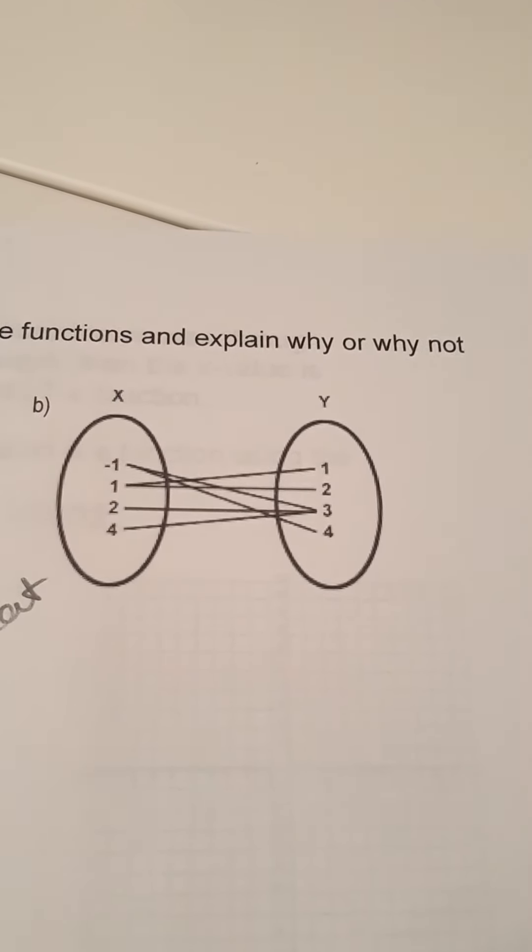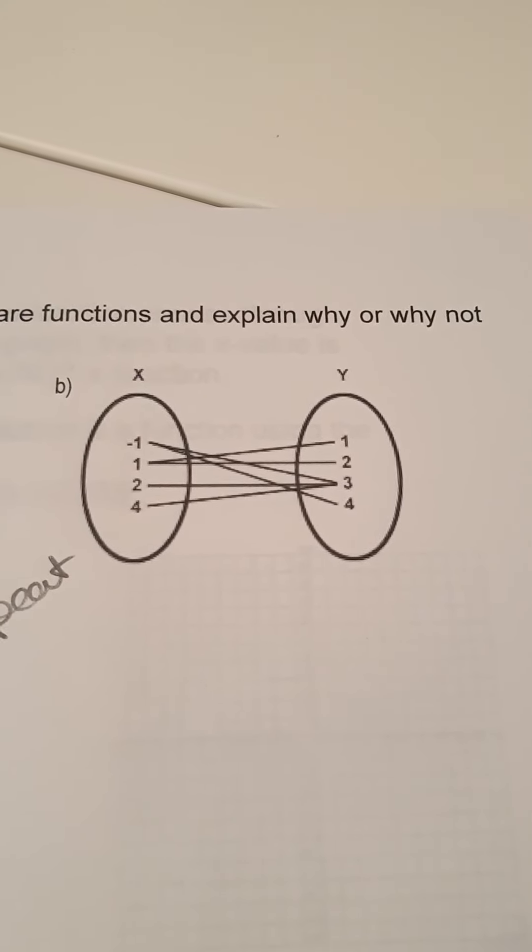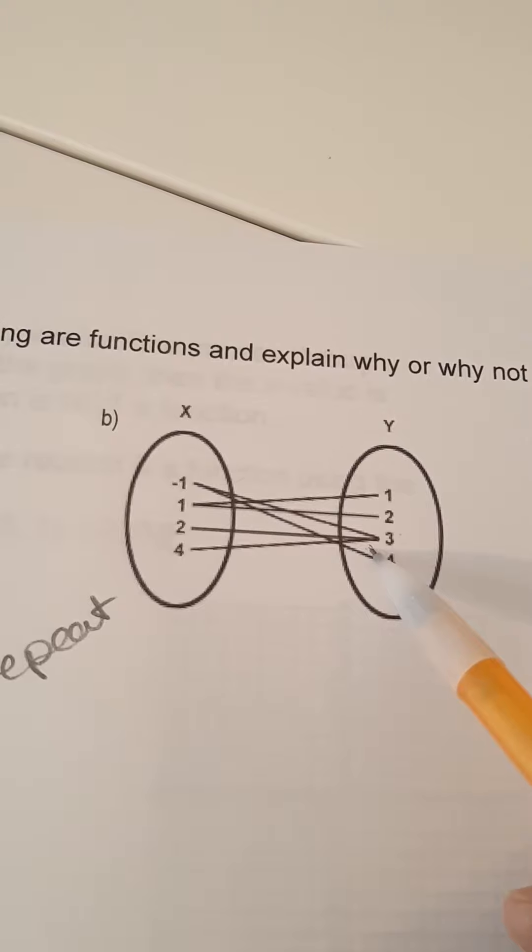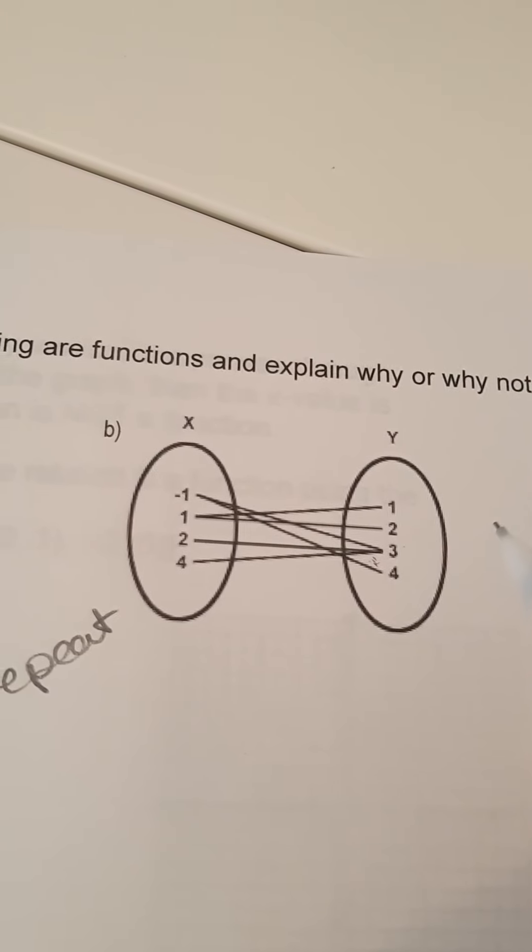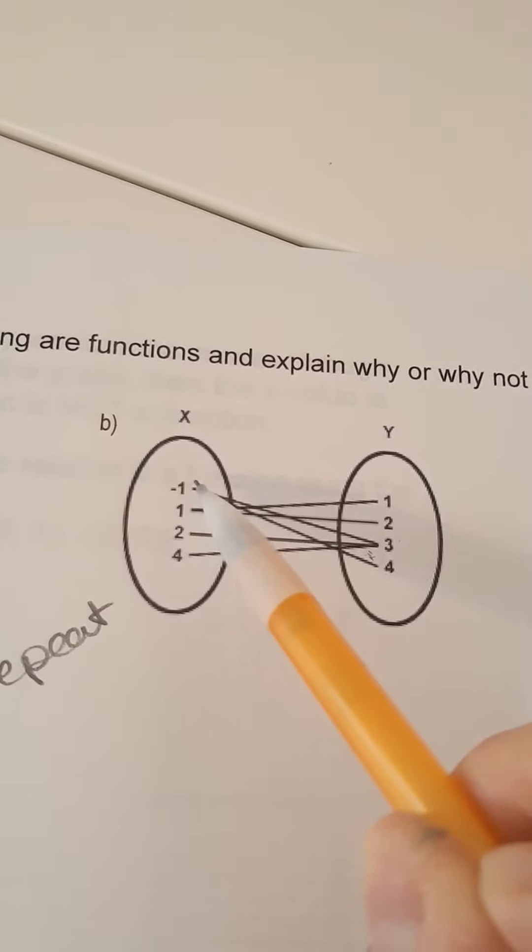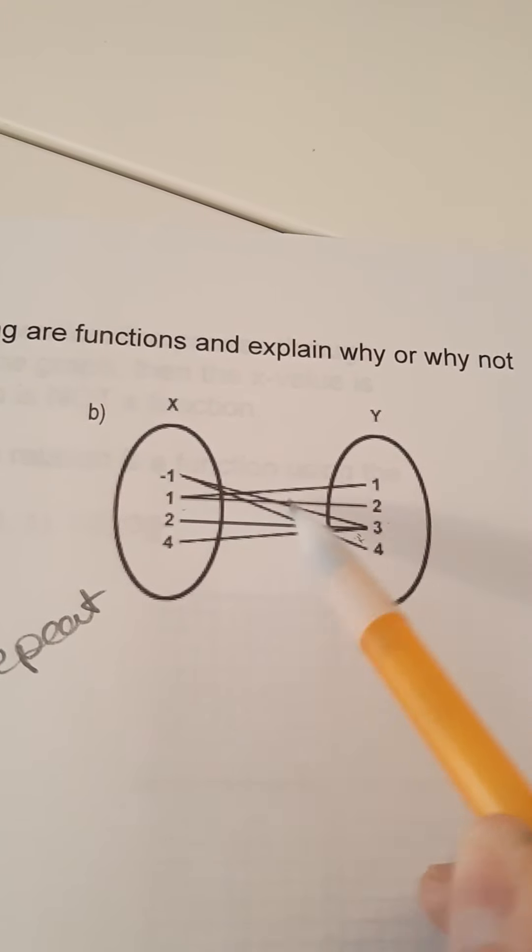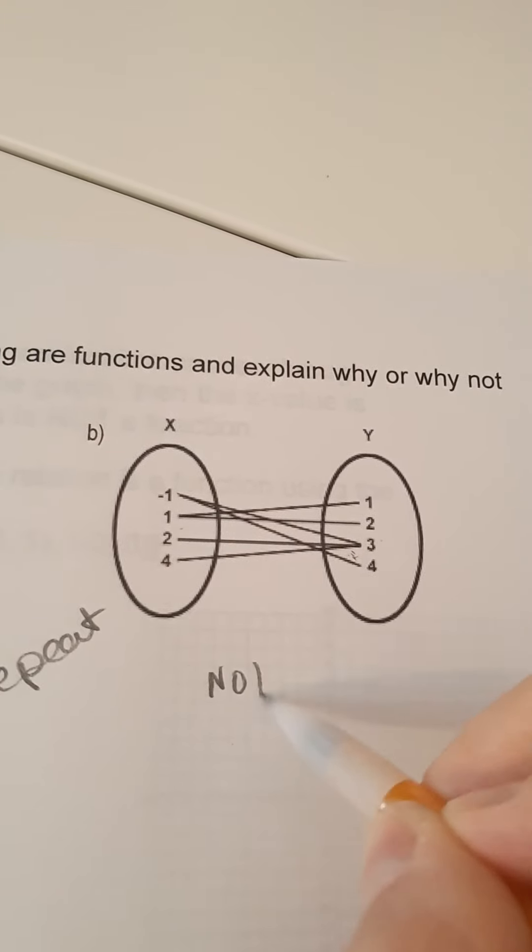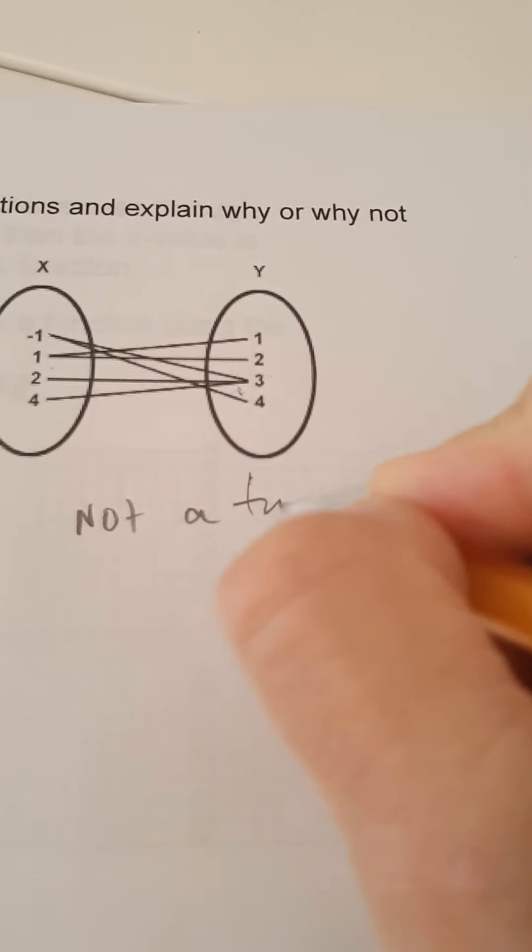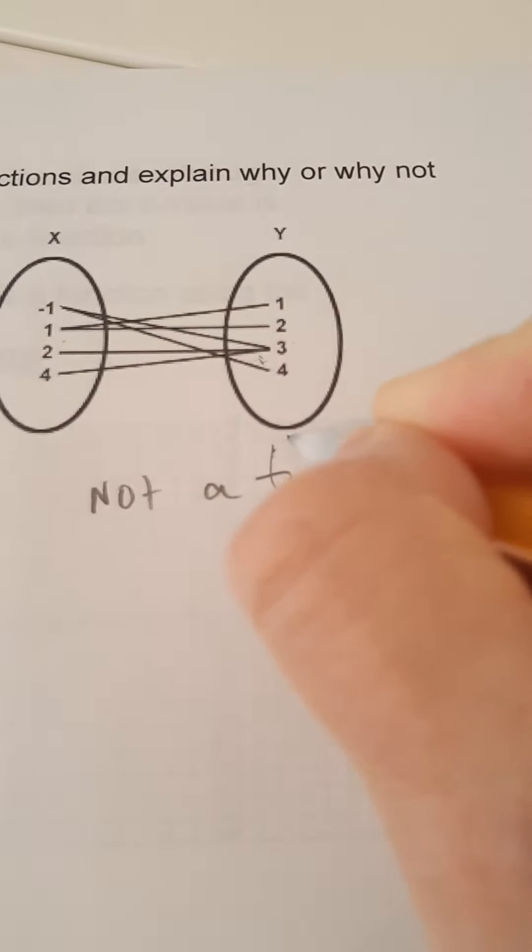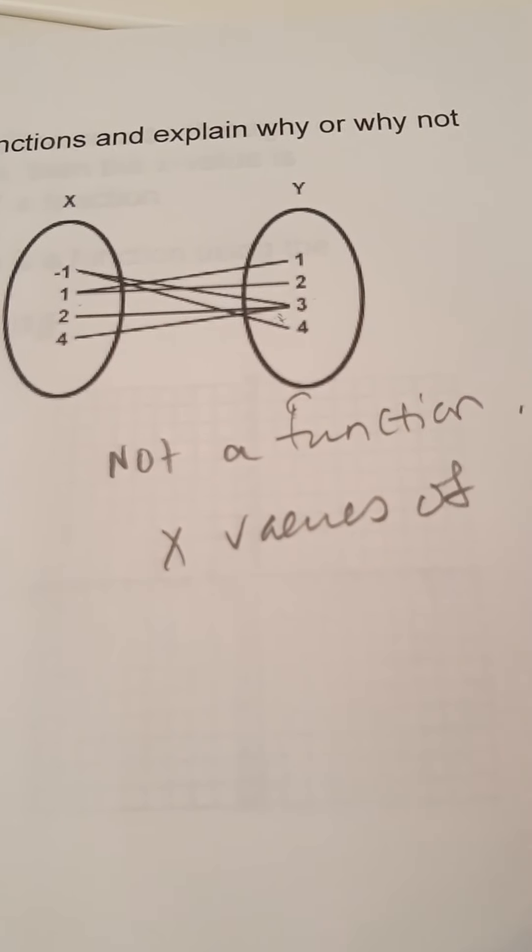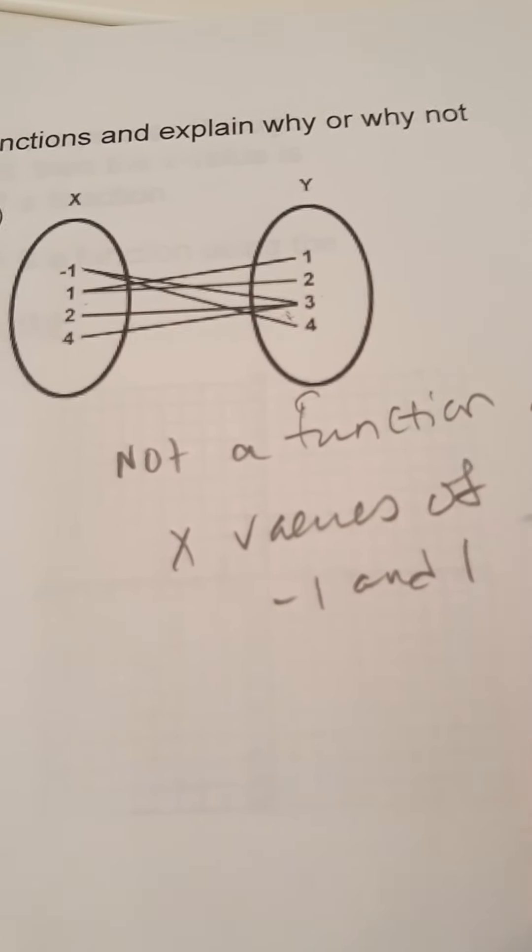This guy, is this guy a function? Well, first of all, there's a lot of business going on over here with the 3. But that, the y values, don't impact our decision if it's a function. Check it out. The negative 1 and the 1 have more than one line or arrow going from it, so this is not a function. There's multiple x values that are repeating, so I'm just going to say x values of negative 1 and 1 repeat.